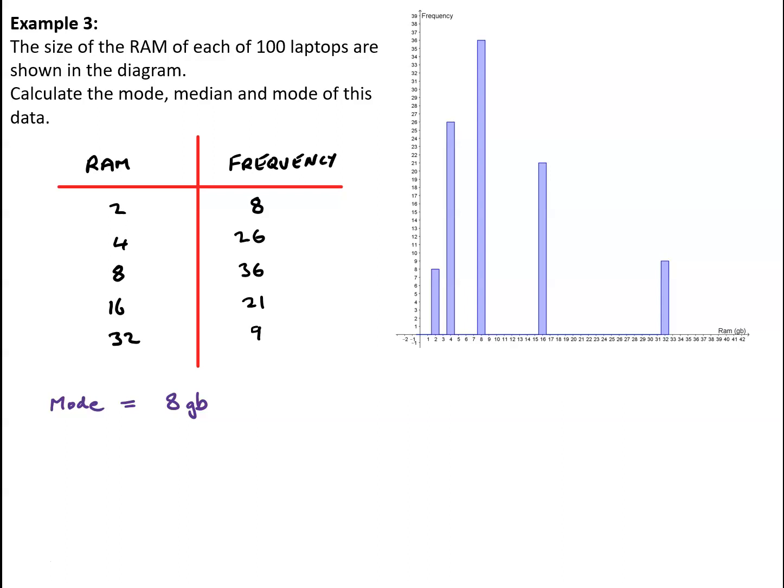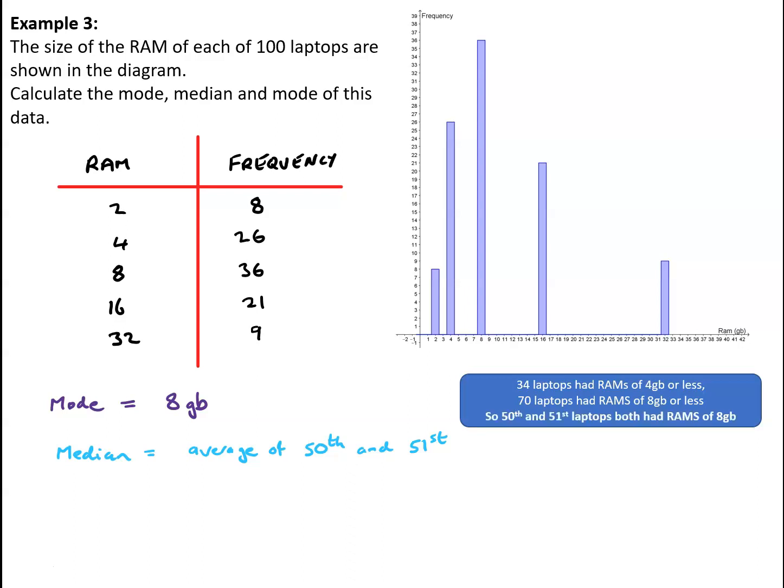We've got 100 laptops. With an even number like 100, there isn't a unique middle one. We need to consider the 50th and 51st laptops when arranged in order. From the table, we can see that 34 laptops had RAMs of 4 GB or less, and 70 laptops had RAMs of 8 GB or less. Because there are no laptops with RAMs between 4 and 8, we can conclude that the 50th and 51st laptops both had RAMs of 8 GB. So the median RAM is 8 GB.